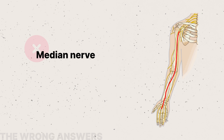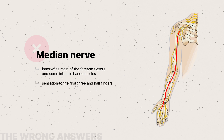The median nerve, although it can be affected by repetitive tasks like typing, carpal tunnel syndrome typically manifests as numbness and tingling in the first 3.5 fingers, not the medial 1.5 fingers.